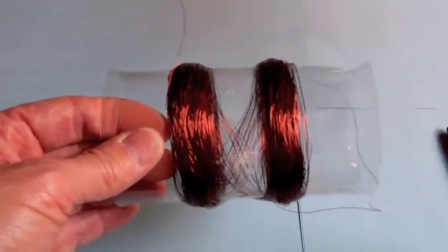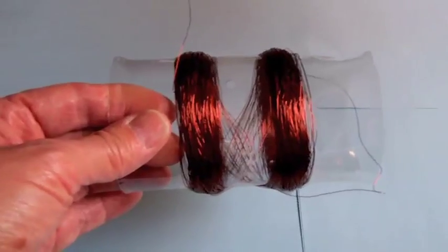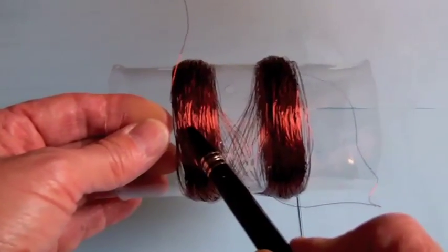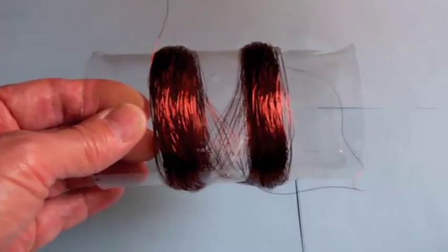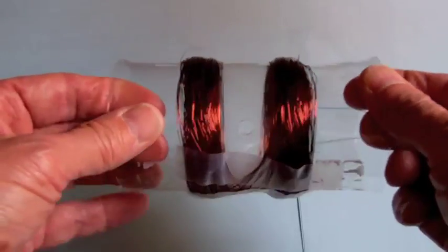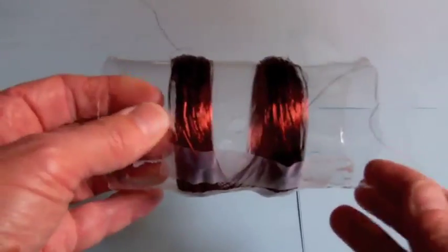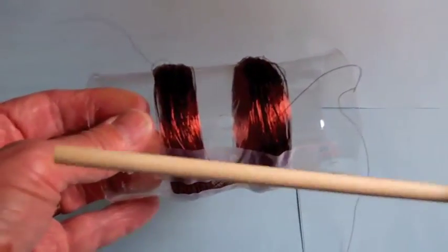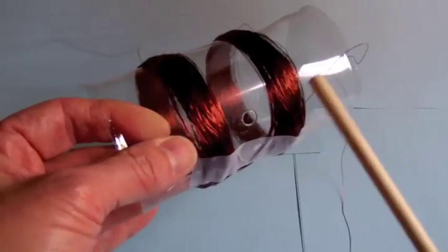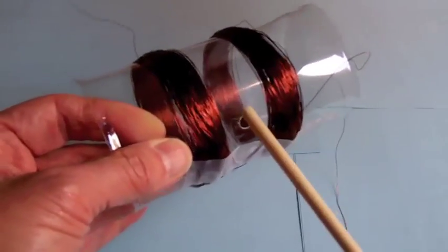I have wound the magnet wire around the plastic tube now - 250 windings on the left side, 250 windings on the right side. I have also drilled a small hole on each side of the plastic tube between the coils. And I am going to insert this round piece of wood through the tube.